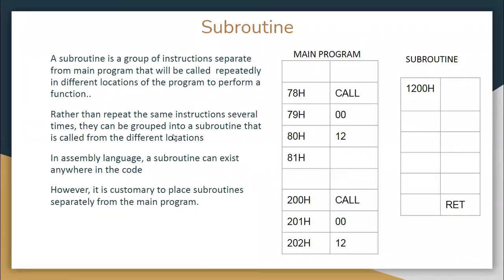In this video we are going to see about subroutines in 8085 — how the subroutine is handled in the microprocessor 8085. A subroutine is similar to functions in higher-level languages, where you write the main program and then write the function separately outside the main program, then call the functions within the main program to execute it. A subroutine is a group of instructions separate from the main program that will be called repeatedly in different locations of the program to perform a function.